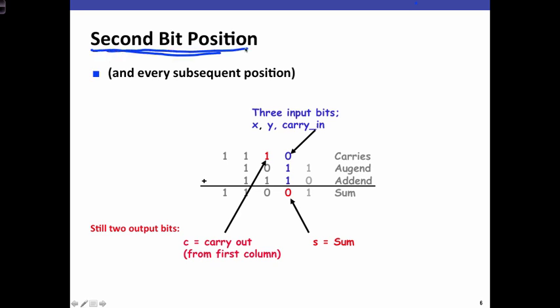In the second bit position, and every subsequent bit position, we're now going to have three input bits. The reason why is because now we have a carry in bit, which was the carry out of the previous bit position. So we have three input bits that all have the same weight. And we still have the sum bit coming out, and the carry out, which still has twice the weight of the sum bit.